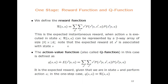The action-value function — also called the Q-function — is the expected reward you get when you're in state s and apply action a. You integrate out s' and r' to get the expected value. In this one-stage problem it is exactly the same as the reward function, but it will be more complicated later on. It's important to understand what the Q-function is: it's the expected reward when you're in state s and you apply action a.